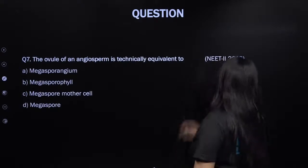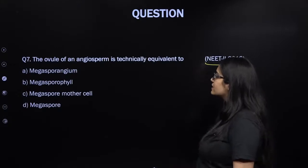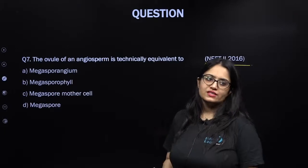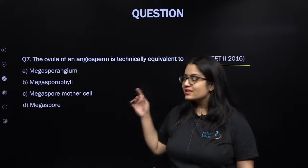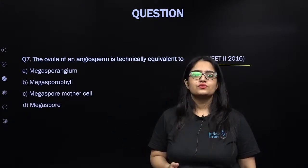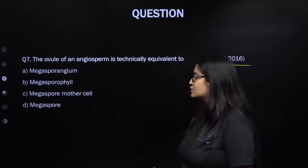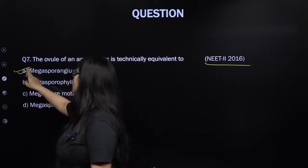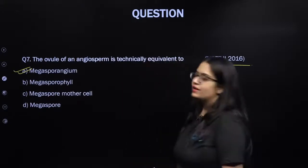This question from NEET 2016: ovule of an angiosperm is technically equivalent to what? The ovule is also known as megasporangium. Ovule is another name for megasporangium. In the history of NEET exam, the same question was repeated twice — that shows its importance.